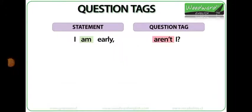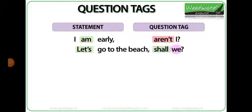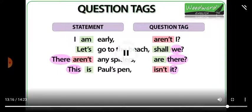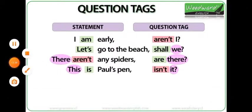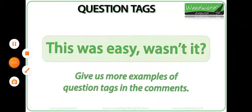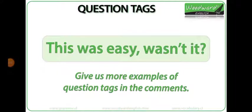Be careful with the following special question tags. 'I am early, aren't I?' — we saw this before. 'Let's go to the beach, shall we?' — when a statement begins with 'let's,' the question tag is 'shall we.' 'There aren't any spiders in the bedroom, are there?' — notice how we use 'there' in the tag. 'This is Paul's pen, isn't it?' — we don't say 'isn't this,' we say 'isn't it.' 'Don't forget, will you?' — with negative imperatives, we normally use 'will you' as the question tag.